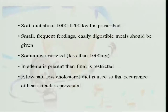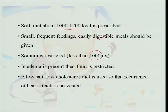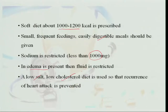A soft diet with 1000 to 1200 kilocalories is then prescribed. Small, frequent meals that are easily digestible are given, and sodium is restricted to less than 1000 milligrams because these patients are also hypertensive. If edema is present, fluid is also restricted. A low-salt, low-cholesterol diet is maintained to prevent recurrence of heart attack.